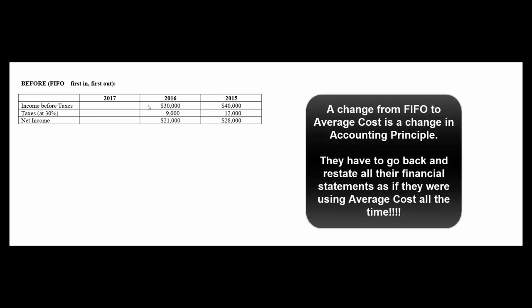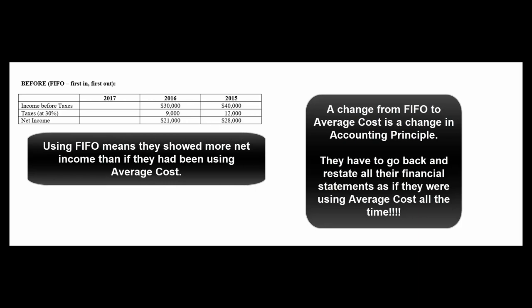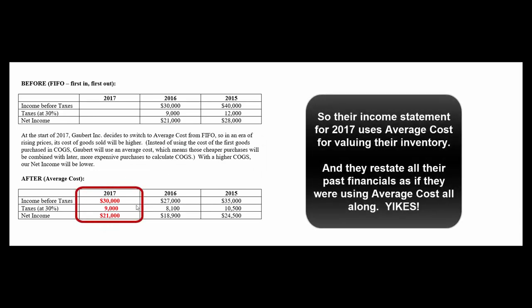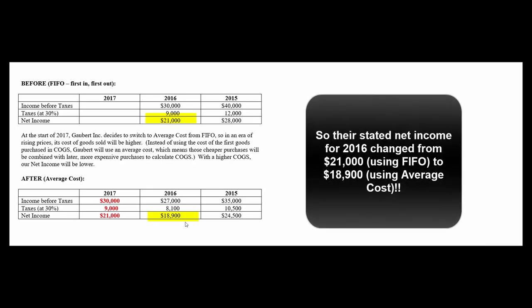For example, these guys have been using FIFO. Using FIFO means they pretend they sold their oldest inventory bought at the cheapest prices, which results in high income before taxes, high taxes, and high net income. But if they decide that average cost better reflects their flow of goods and switch from FIFO to average cost starting in 2017, they also go back and restate all previous years. So if you looked at their 2016 annual report, it said $21,000 net income, but opening the 2017 annual report shows they made $18,900 — because they had to go back to the very beginning and restate all their income statements for all years.